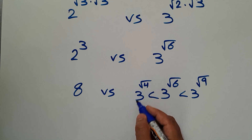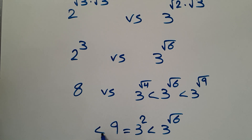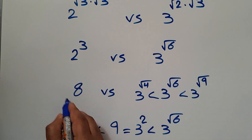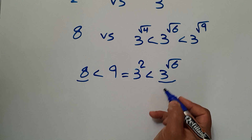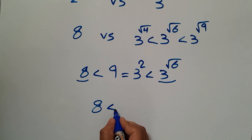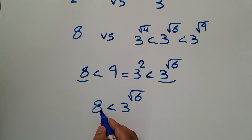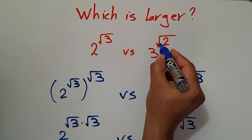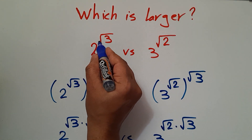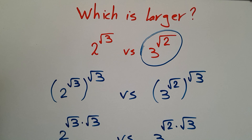3 to the power of square root of 4 is 3 squared, which is 9. So 9 is less than 3 to the power of square root of 6, and 9 is greater than 8, the left side. Therefore 8 is less than 3 to the power of square root of 6, meaning the right side is greater than the left side. So 3 to the power of square root of 2 is greater than 2 to the power of square root of 3 — this number is larger. Thank you for watching my video until the end, see you in the next video.